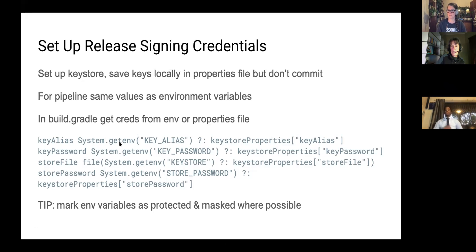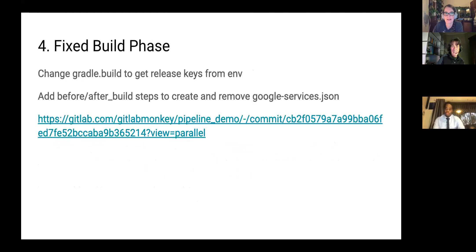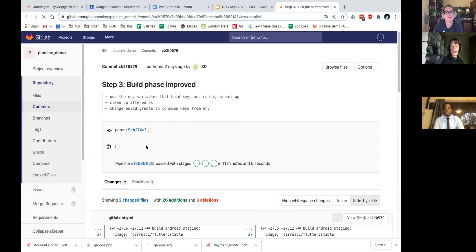When you set up these environment variables, I would recommend making them protected and masked, because you don't want your key printed into the pipeline output for everybody to see. With this extra magic, I hopefully have fixed my build pipeline.